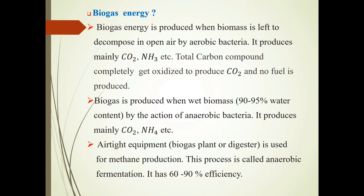Biogas is produced when wet biomass — meaning 90 to 95% water content — is acted upon by anaerobic bacteria. It produces mainly CO2 and NH4. Aerobic bacteria grow in the presence of oxygen, and anaerobic bacteria grow in the absence of oxygen. This process uses an airtight equipment — the biogas plant or digester — and is called anaerobic fermentation. It has an efficiency of 60 to 90%.